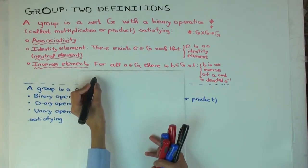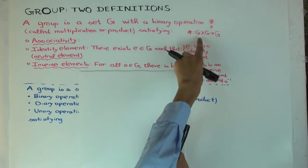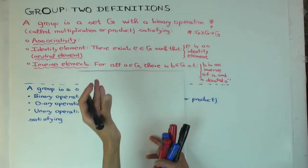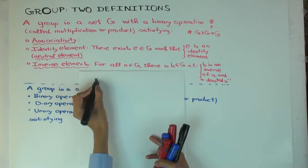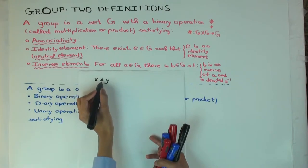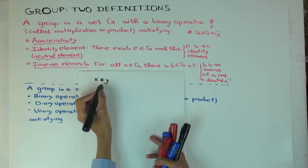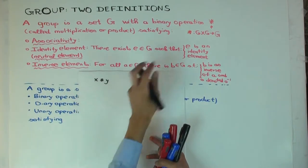So star of x, y will be written as x star y — you write the operator in between. This is called infix notation, and it's just more convenient than writing it the other way.